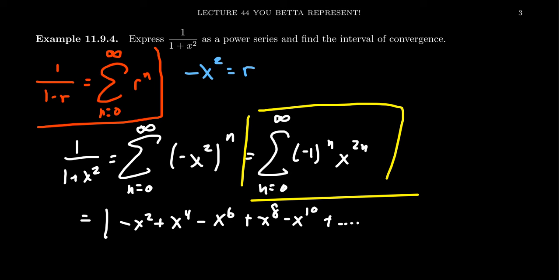Because our ratio is negative x squared, we want the absolute value of r, which is negative x squared, to be less than 1. Since we're taking absolute value, the negative sign does nothing. We need the absolute value of x squared to be less than 1. Taking the absolute value of a square is the same as the square of the absolute value.